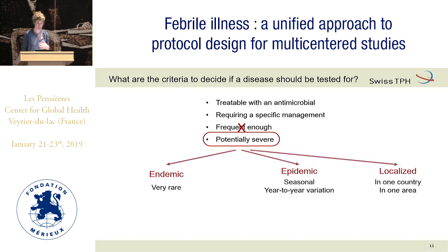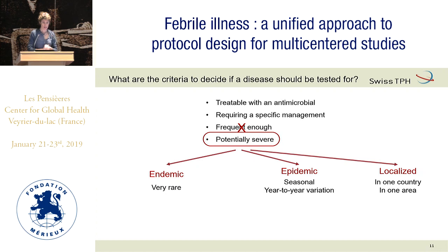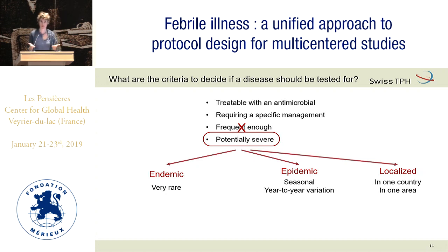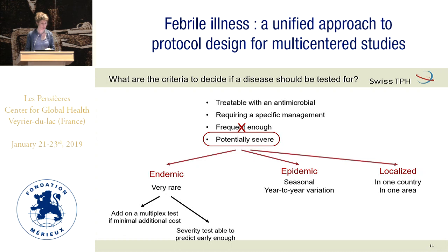You can have an endemic disease that is very rare. How to detect it? I give you an example: Crimean-Congo hemorrhagic fever. Suddenly you have a patient, and when you look at the clinical descriptions, they are never diagnosed at an early stage, only when they get severe. For this, we really don't have a solution.